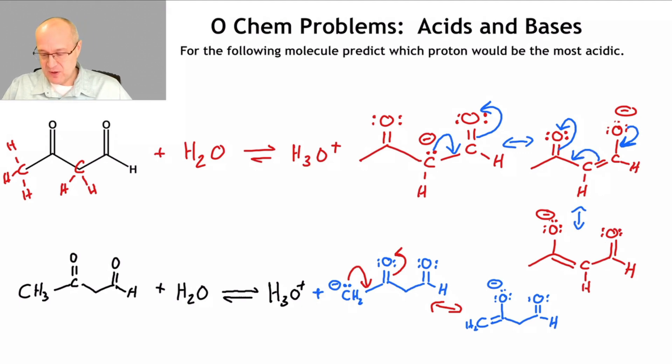This is a major contributor. That's a minor contributor. So the two major ones have octets everywhere and the anion is on an electronegative atom. That's a really good thing, okay, in terms of stability.